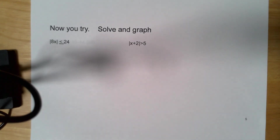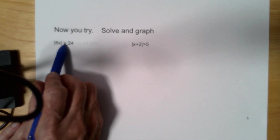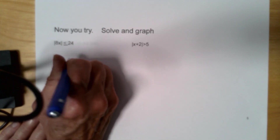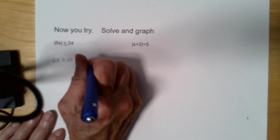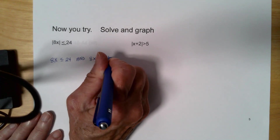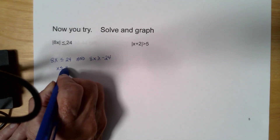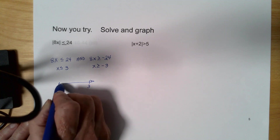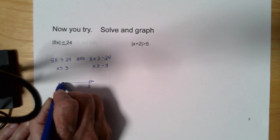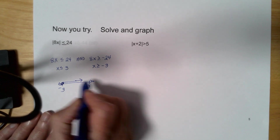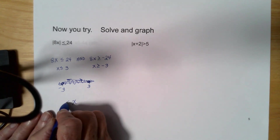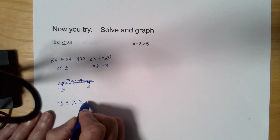Now you try some — pause the video and come back to check. This is a less than, so it's an AND statement. I have 8x is less than or equal to 24 and 8x is greater than or equal to negative 24. Solving: x is less than or equal to 3 and x is greater than or equal to negative 3. Both are closed circles — negative 3 goes left and positive 3 goes right. What they have in common is between them: x is greater than or equal to negative 3 and less than or equal to positive 3.